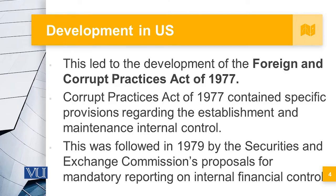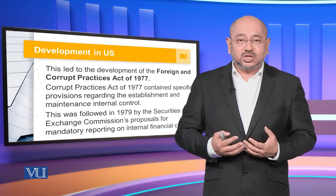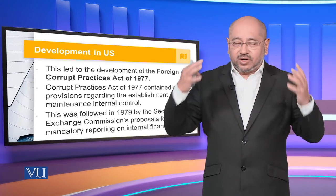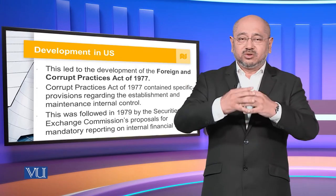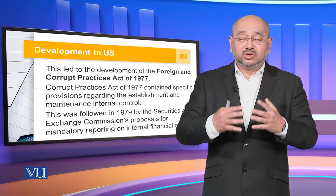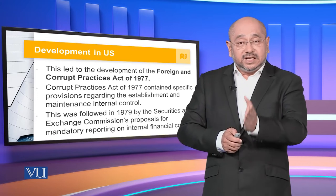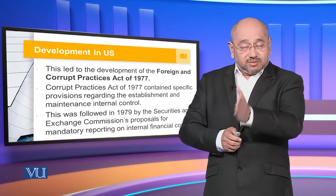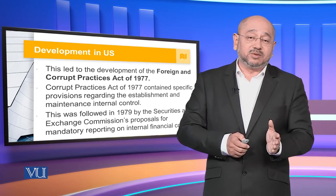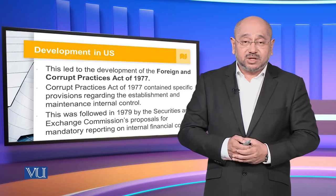This led to the development of the Foreign Corrupt Practices Act of 1977. The Act contained specific provisions regarding the establishment and maintenance of internal controls, and this was followed in 1979 by the Securities and Exchange Commission's proposal for mandatory reporting on internal financial control. This overarching law looked at foreign interference, corrupt practices, and how different organizations were sidelining the legal system and illegally benefiting different corporations and political parties.